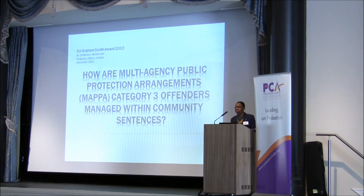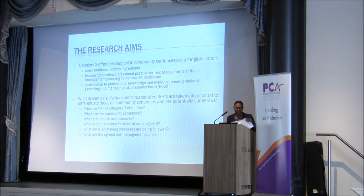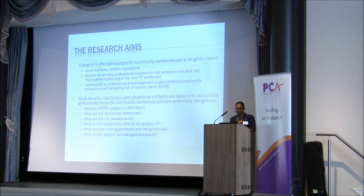The question I asked was how our multi-agency public protection arrangements map our Category 3 offenders managed within community sentences. Category 3 MAPPA offenders are those individuals who are considered to be other dangerous offenders who pose a risk of serious harm and therefore require active multi-agency management. These are offenders that could include people serving community orders, suspended sentence orders, or even who've been cautioned by the police.